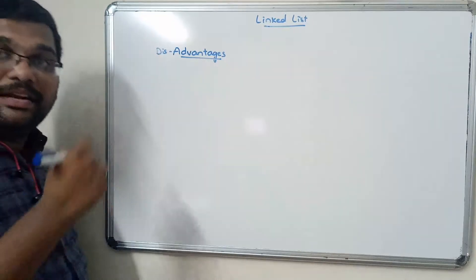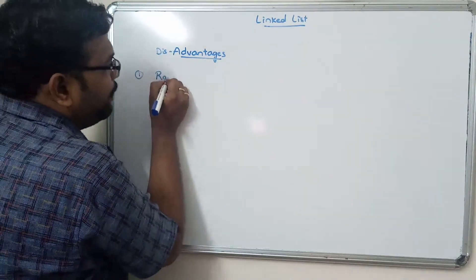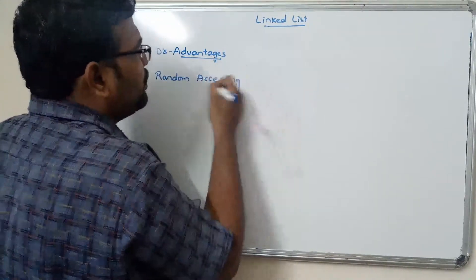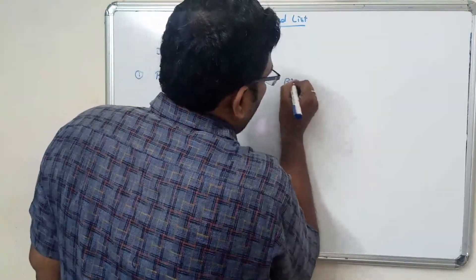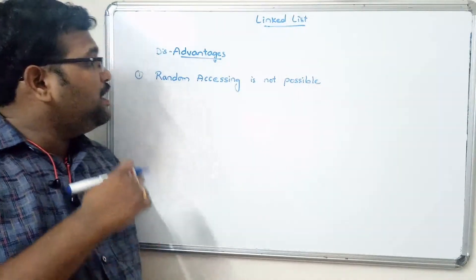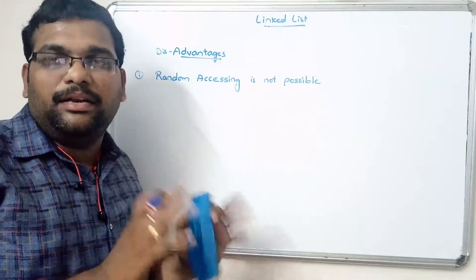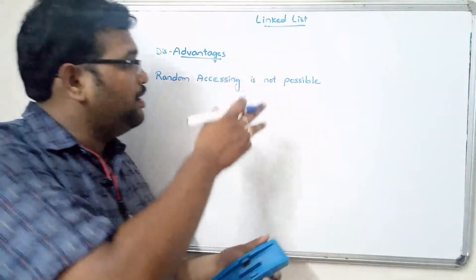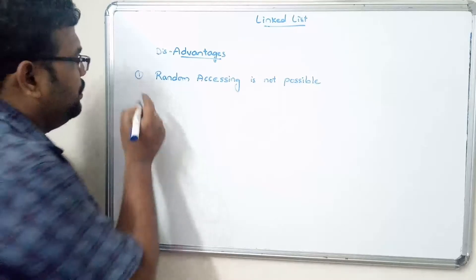Now the disadvantages. The first and most important disadvantage is that random accessing is not possible. Since we are not using index positions, there is no way to access an element directly. If you want to access the fourth element, you must first access the third; if you want the fifth, you must access the fourth first.